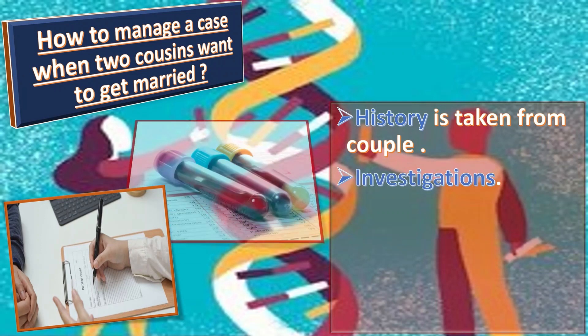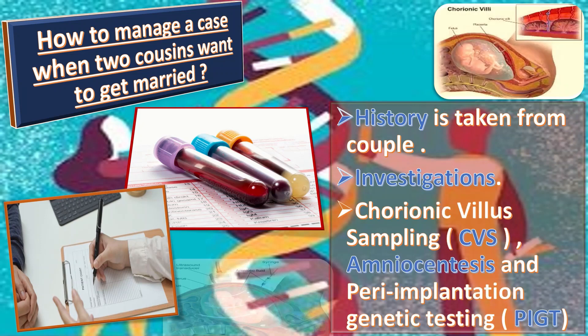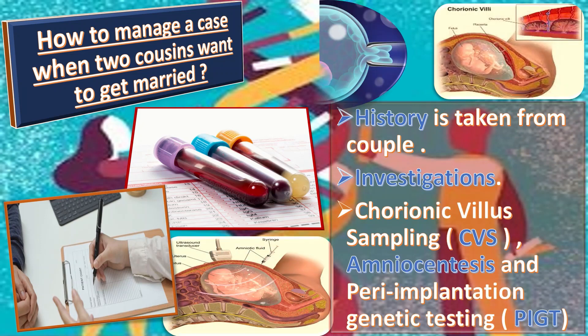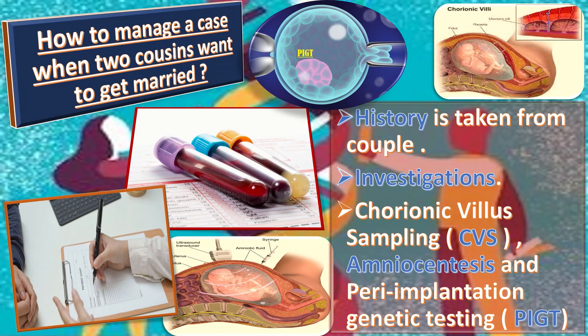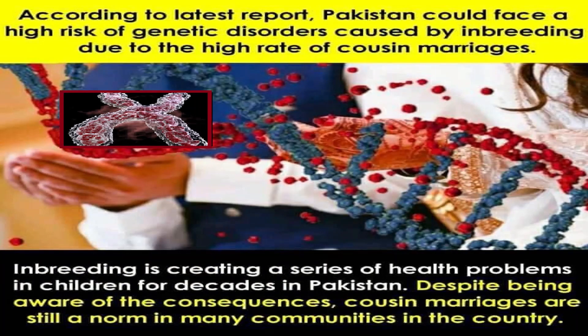Common genetic disorders are investigated by blood tests in the family. Even if the couple gets married and the woman becomes pregnant, appropriate investigations may save the future baby from certain congenital disorders. The role of chorionic villus sampling, amniocentesis, and preimplantation genetic testing should not be forgotten, although these are invasive tests.